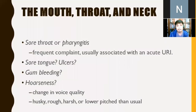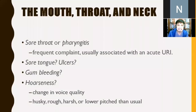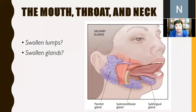For the mouth, throat, and neck, ask about sore throat and pharyngitis. Are there sore tongue ulcers? Observe for ulcers and gum bleeding — the usual cause of gum bleeding is gingivitis. Have there been changes in voice quality or hoarseness? Are there observed swollen lumps or swollen glands? Then proceed with physical examination.